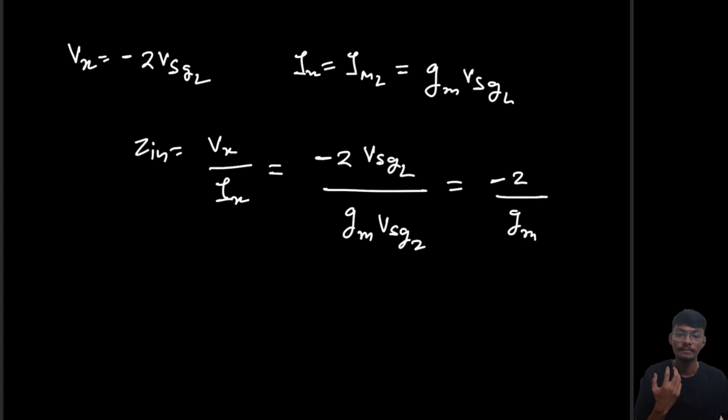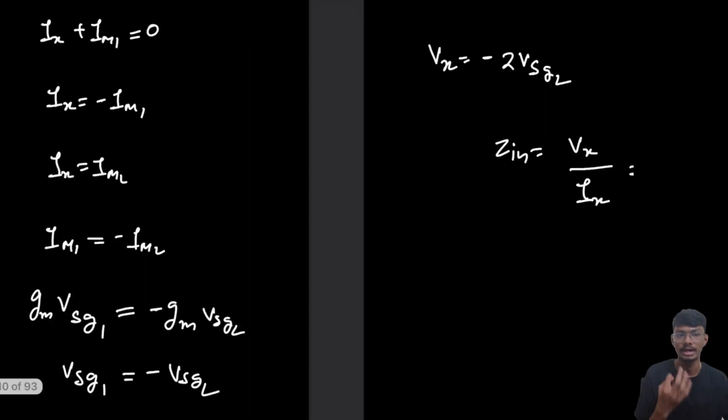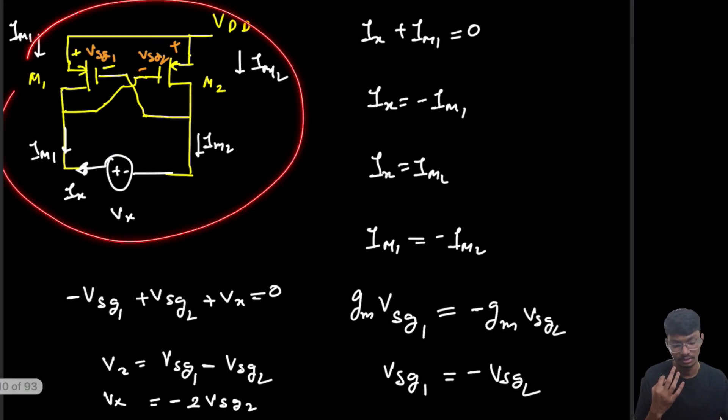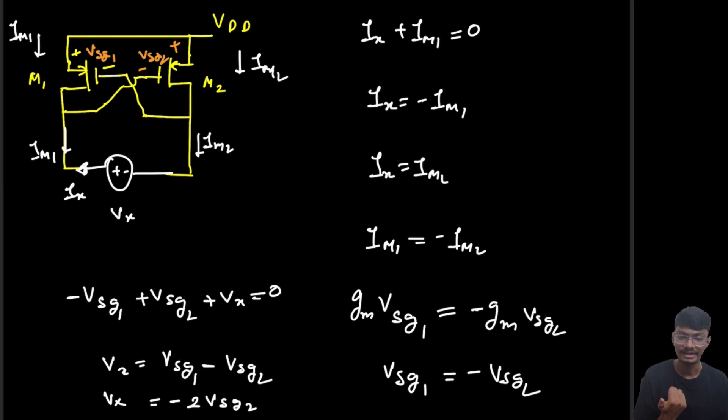We are getting minus 2 by gm. The impedance here is negative and it can happen because this is an active circuit. For a passive circuit it won't be possible, but for an active circuit it is possible.